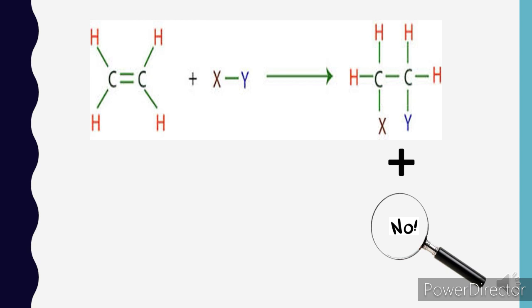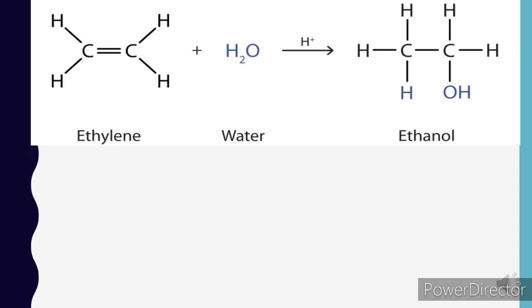Let's see some examples of addition reaction. In first example, an alkene called ethylene is combining with water in presence of acidic medium. And the product we get here is ethanol which is an addition product.